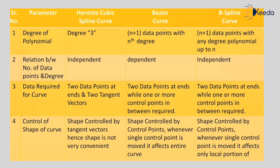The last parameter is control of shape of a curve. In Hermite cubic spline curve, the shape is only controlled by tangent vectors, hence the shape is not very convenient to control. In Bezier curve, the shape is controlled by control points, but moving a single control point affects the entire curve. In B-spline curve, the shape is also controlled by control points, but whenever a single control point is moved, it affects only the local portion of the curve.